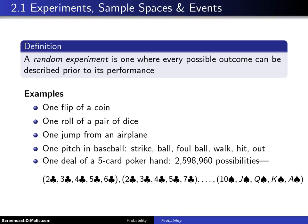This is the beginning of section 2.1, and section 2.1 contains experiments, sample spaces, and events. We begin with the definition of a random experiment. A random experiment is one in which every possible outcome can be described prior to its performance.